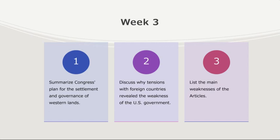Now let's look at some of the main weaknesses of the Articles. We're going to discuss five. First, the lack of central authority — they could not levy taxes or regulate trade, leading to financial instability. Second, there was no executive branch to enforce laws or coordinate government actions, which hindered effective governance. Third, there was no national currency — states issued their own currencies, causing economic chaos and making trade difficult.